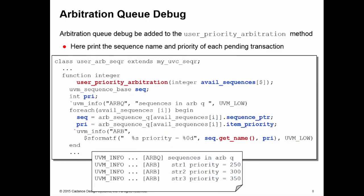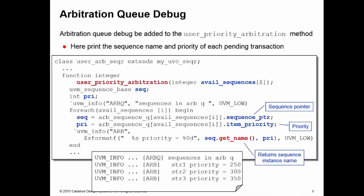We can also use our definition of user_priority_arbitration to help debug the arbitration queue. For example, I want to print out the sequence name and the priority of every pending transaction currently waiting to be selected by the sequencer. Inside my user_priority_arbitration method, I iterate through all elements in the avail_sequences queue and use those to index into arb_sequence_queue to access the individual pending transactions. I extract the sequence pointer and also the priority of each item and print them out. Notice that calling get_name on the sequence pointer gives you the instance name of the sequence which created that item. So using the user_priority_arbitration method can be useful for debug, if no other purpose.